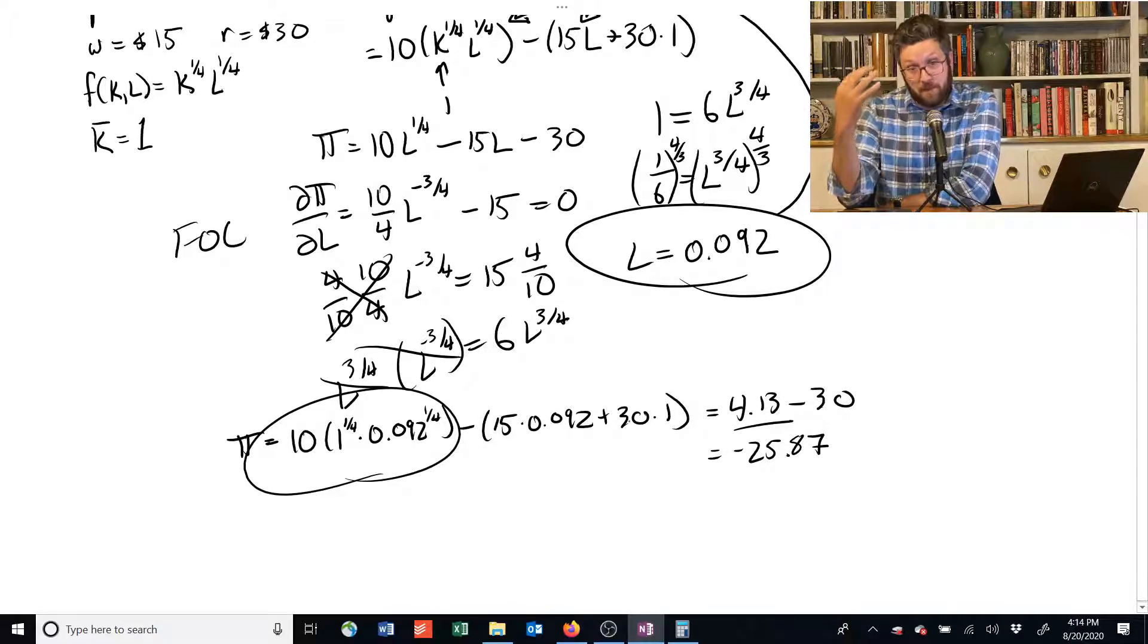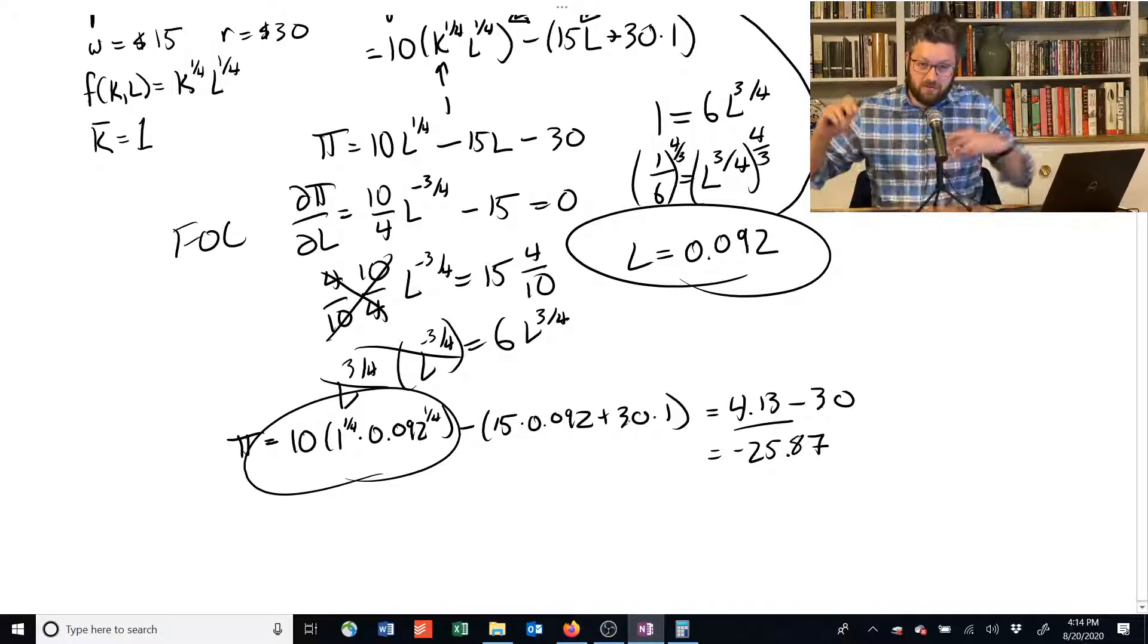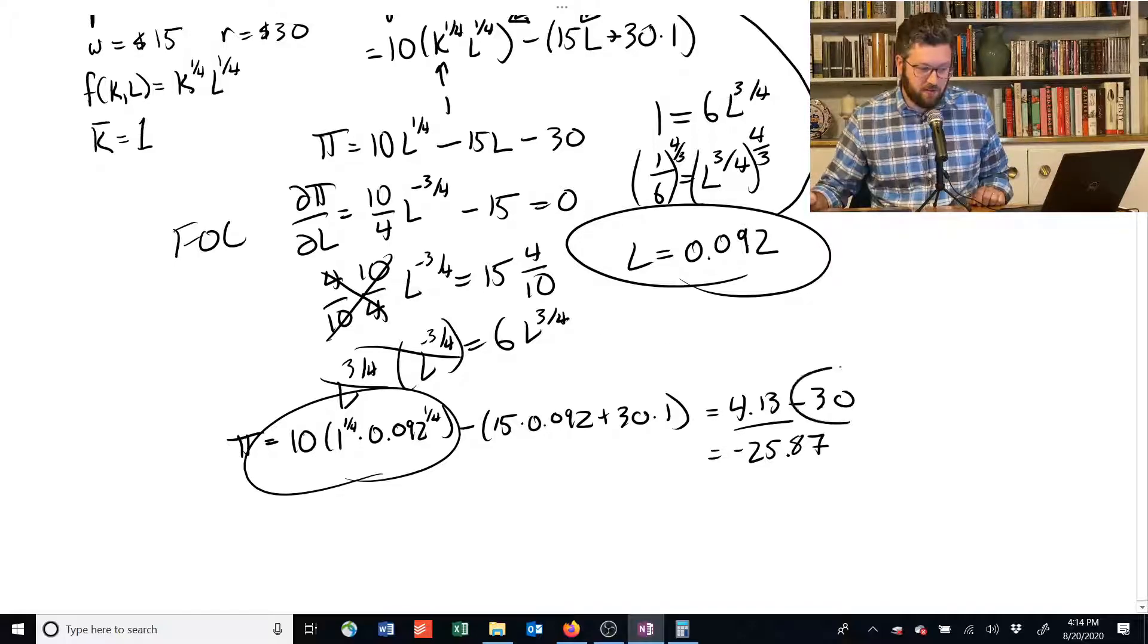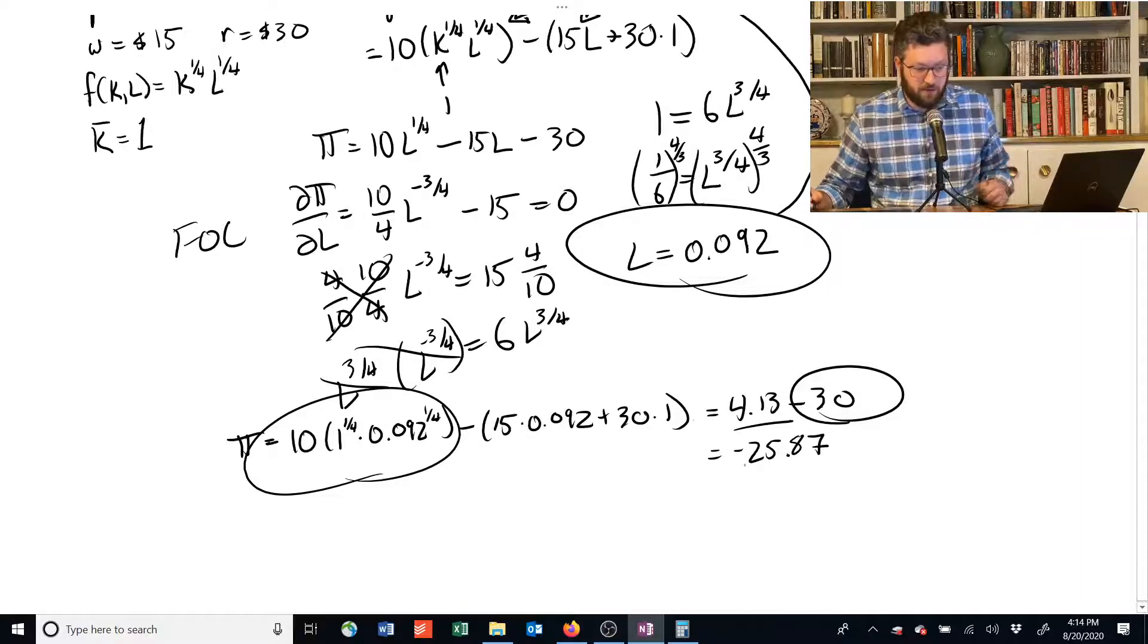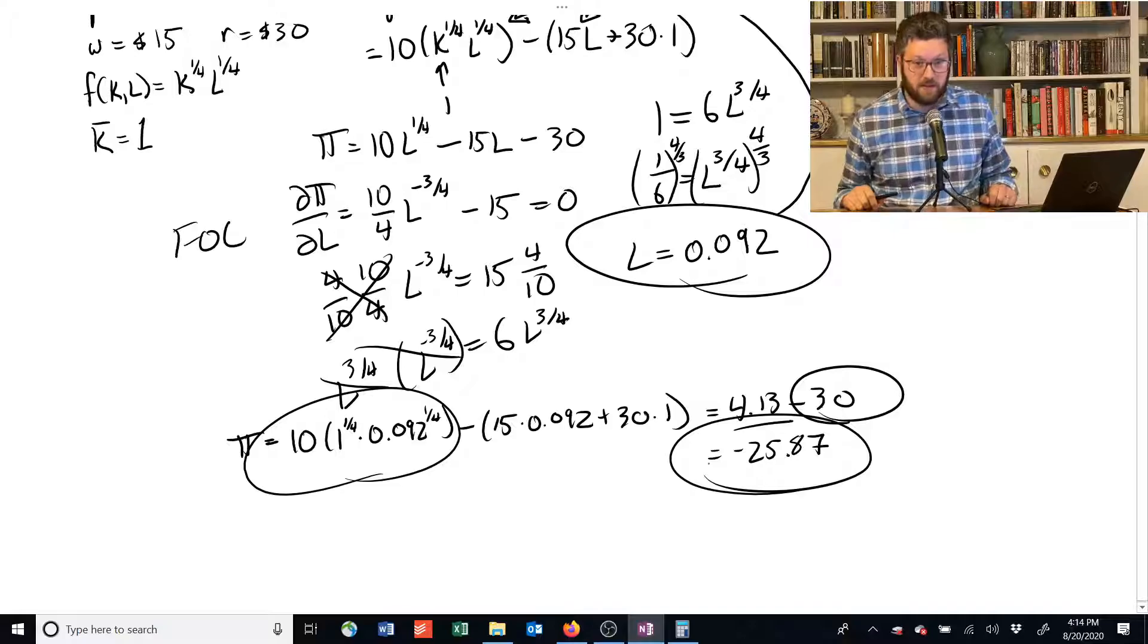But that's positive. So this guy's making as much money as he can on the part that labor can affect, but he's got the sort of dead weight of all that capital that he's responsible for paying for, which costs 30 for each unit. He's got one unit. You subtract 30 from that and his net profit is negative $25 and 87 cents.